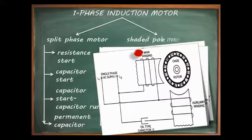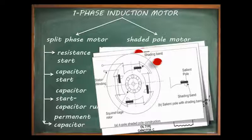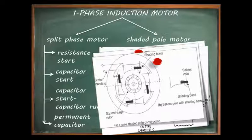Another type of single phase induction motor is the shaded pole motor. It is a type of single phase induction motor in which the stator has salient poles, each provided with its own exciting coil. About one fourth to one third of each pole is wrapped by a copper strap forming a closed loop known as a shading coil.